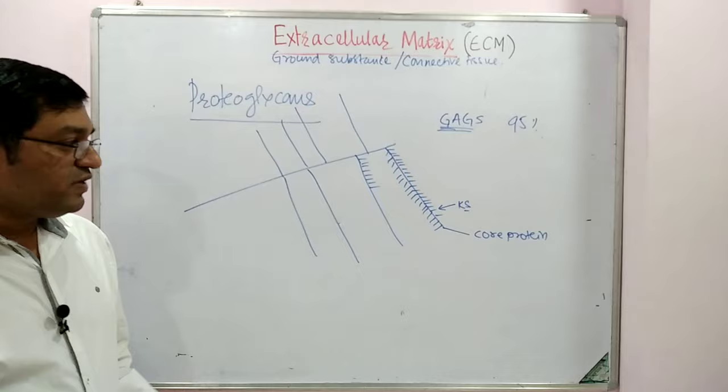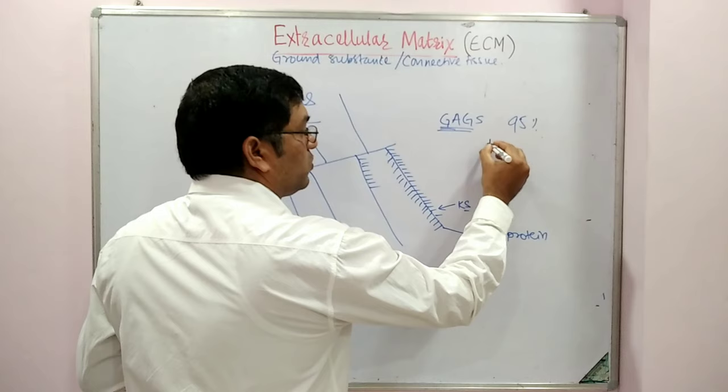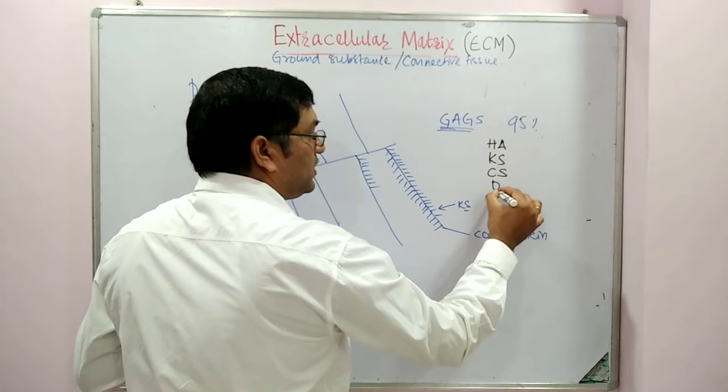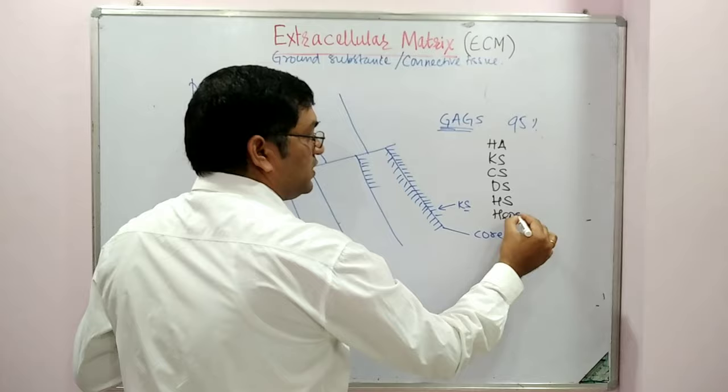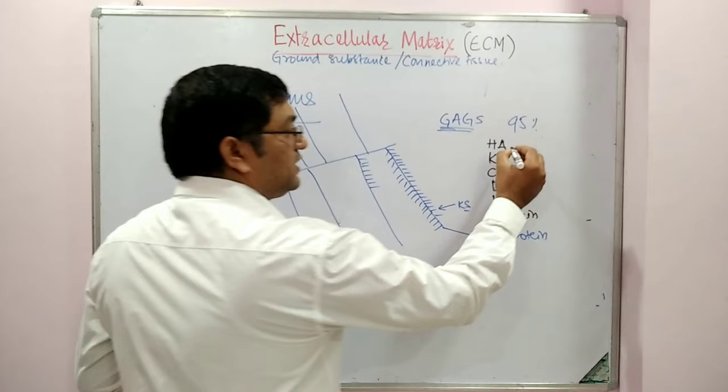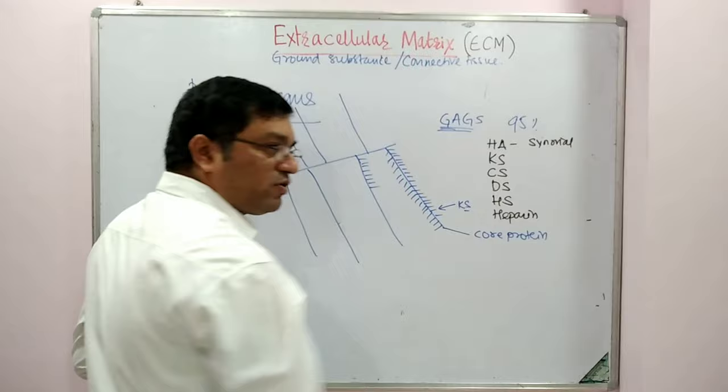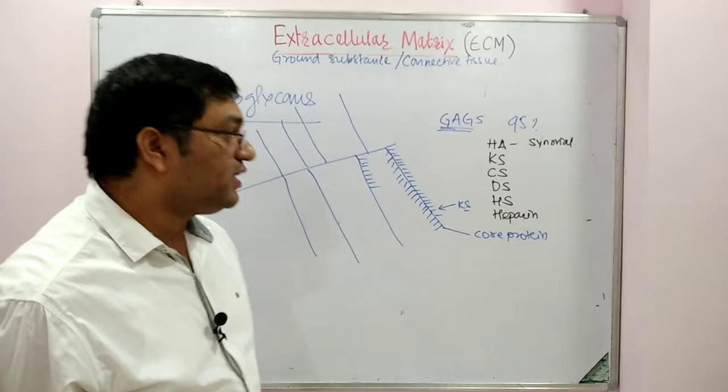The various glycosaminoglycans present in proteoglycans are: hyaluronic acid — present in synovial fluid and vitreous humor, acting as a shock absorbent and lubricant; keratan sulfate — present in cornea, responsible for corneal transparency; chondroitin sulfate — present in cartilage; dermatan sulfate — present in skin with wide distribution.